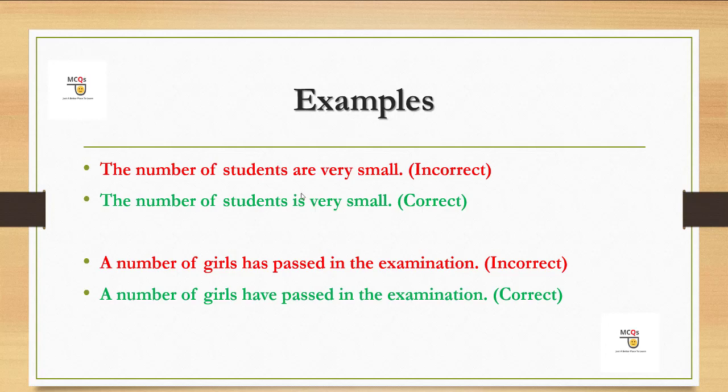'A number of girls has passed in the examination' - اور پھر ہم نے پڑھا دوسرا point، کہ جب expression 'a number of' آئے گا تو اس کے بعد ہم نے verb plural لگانا ہے۔ تو یہاں کیا verb ہے؟ Singular ہے، تو اس کو ہم plural کریں گے۔ تو ہمارا یہ error ٹھیک ہو جائے گا۔ 'A number of girls have passed in the examination'.